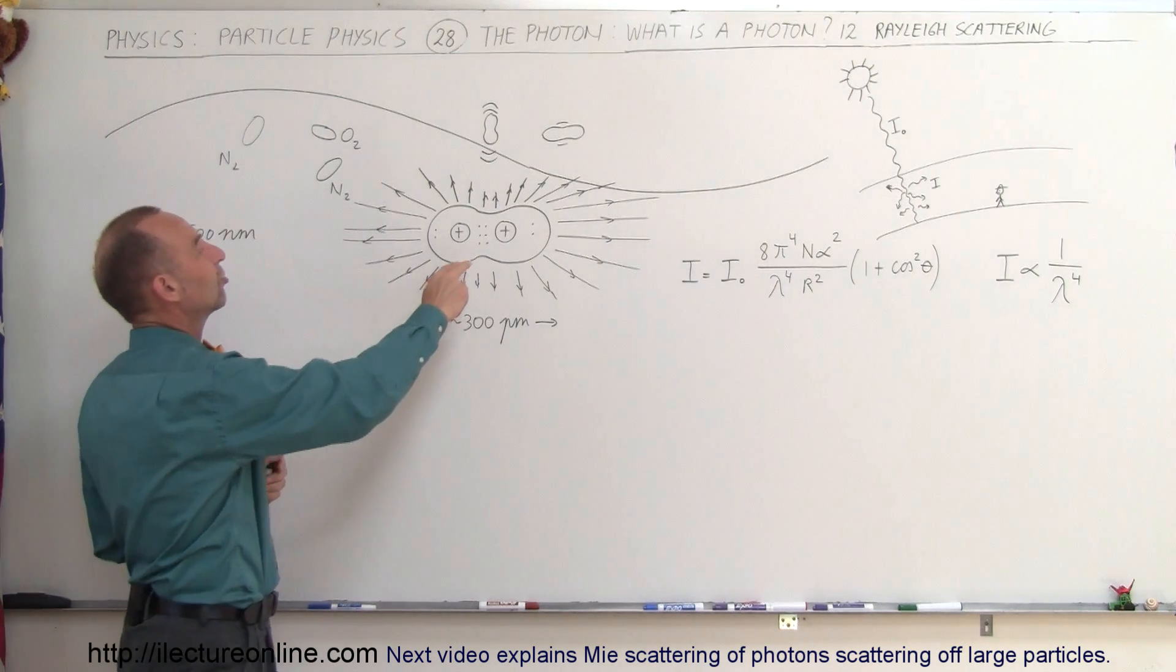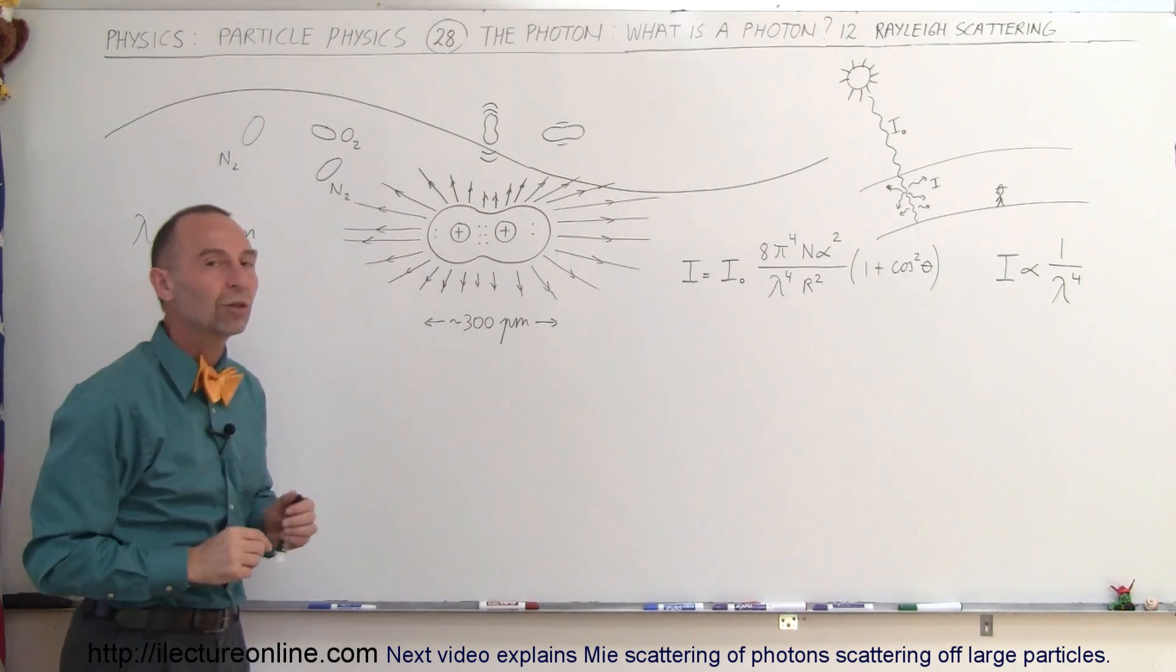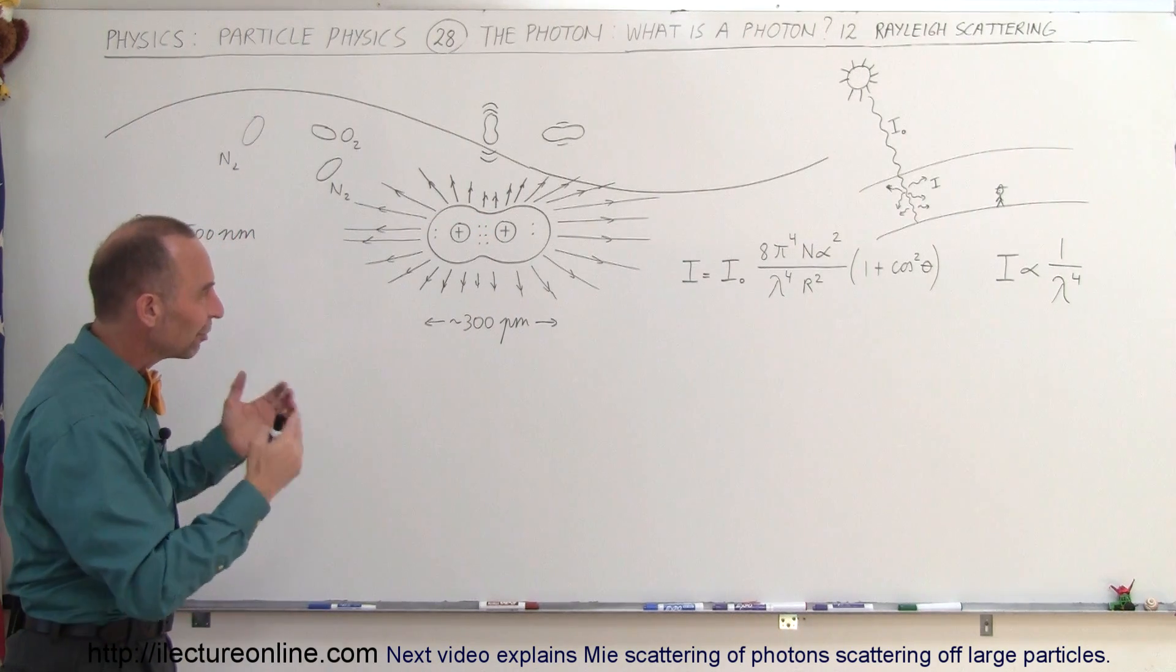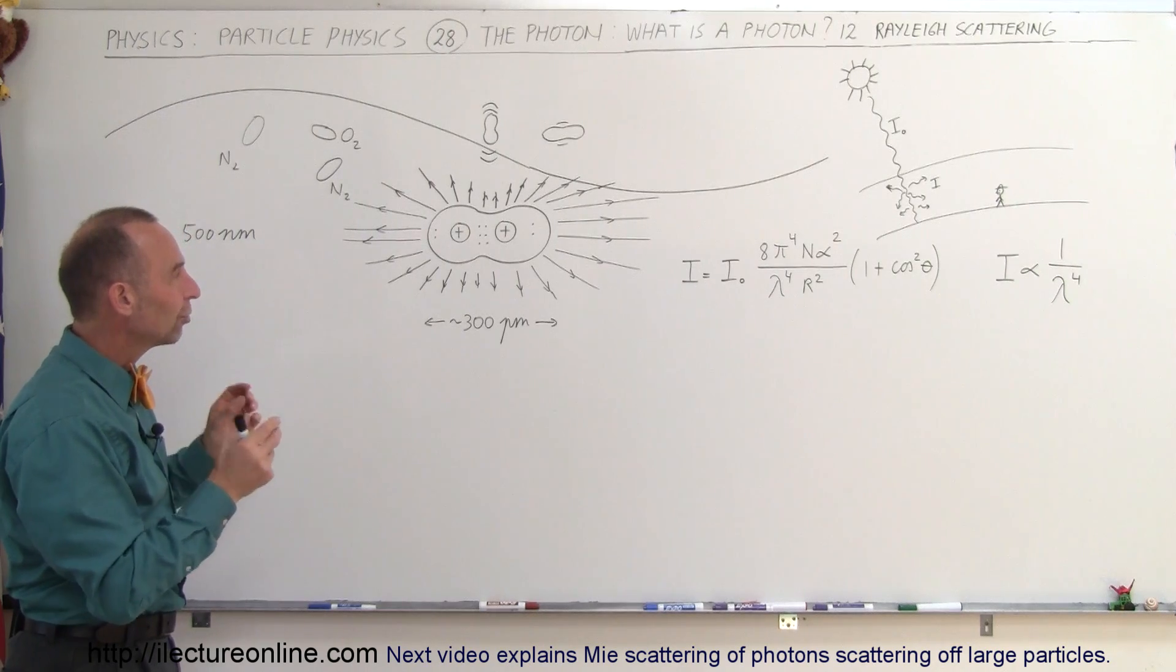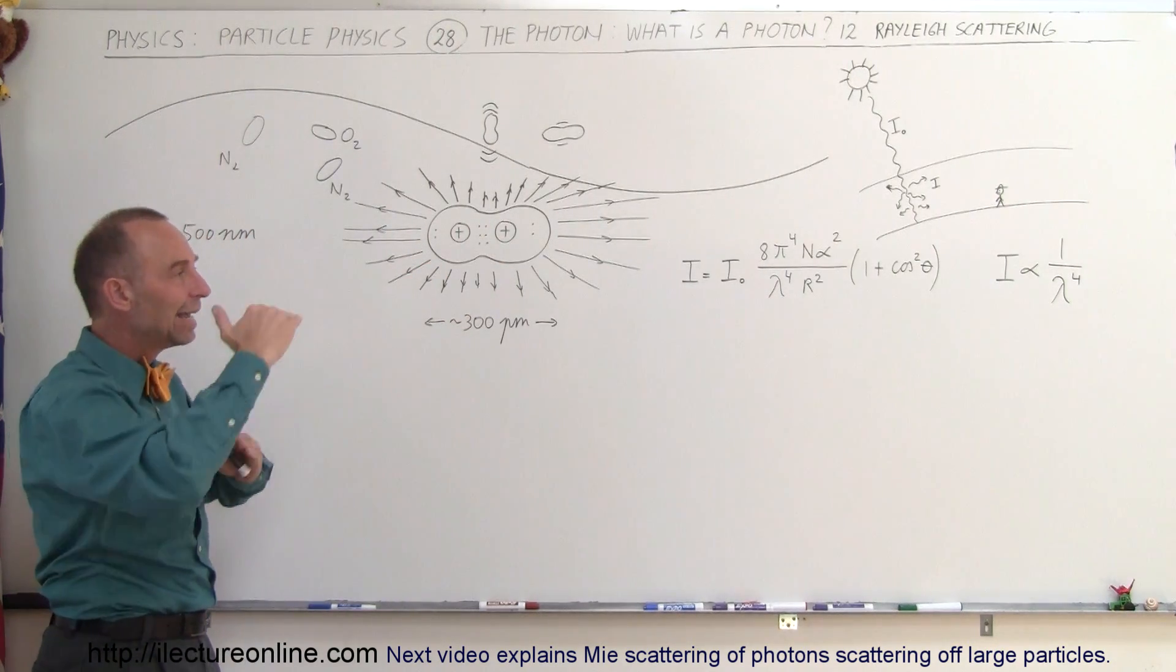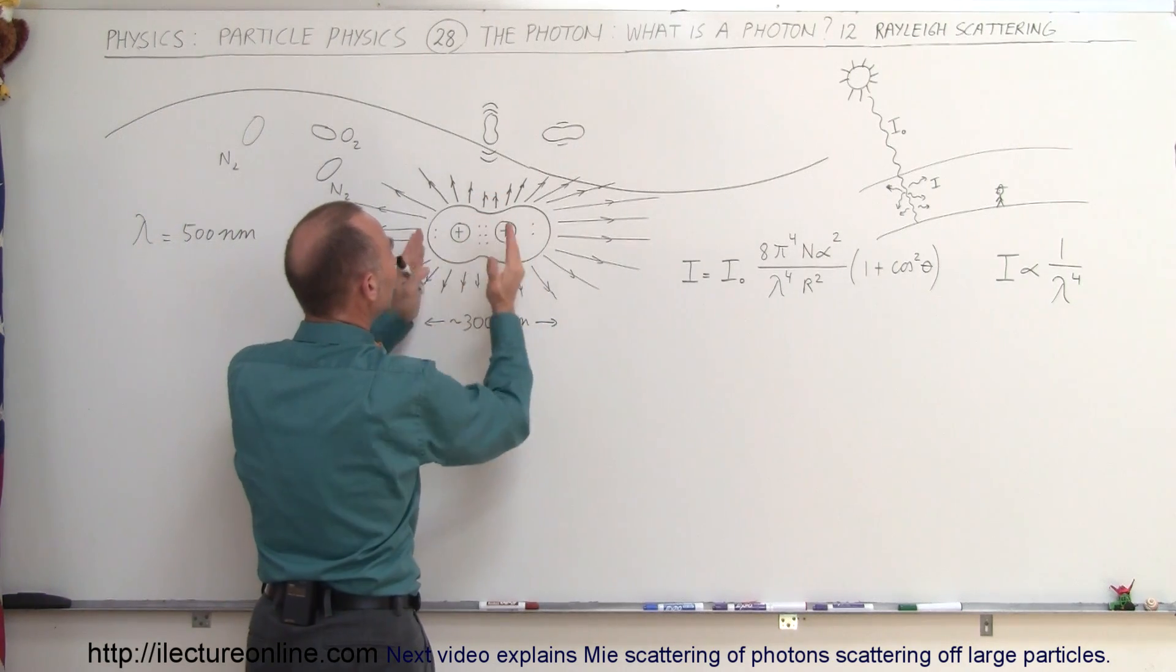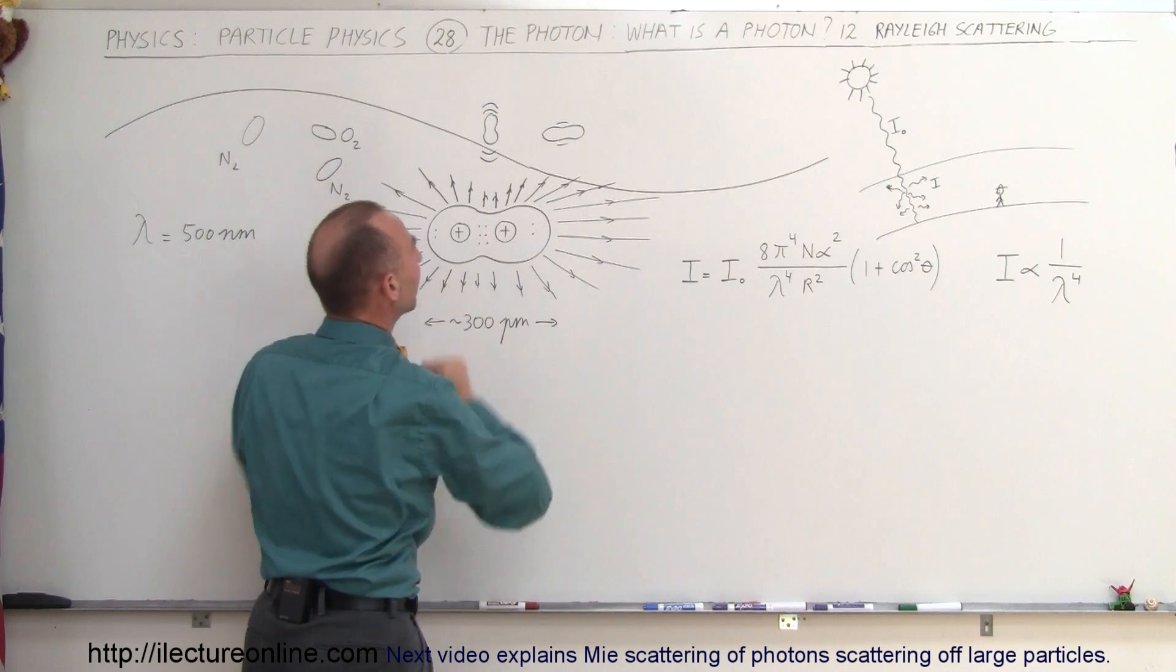Same with oxygen, except with oxygen we have four valence electrons here and only four being shared between the two. But the principle is the same. And so it turns out that these molecules can actually vibrate in various directions. The molecule can vibrate like this, it can vibrate like this, but it's more likely to vibrate like this.